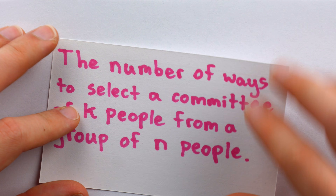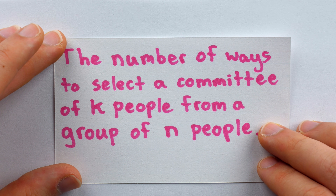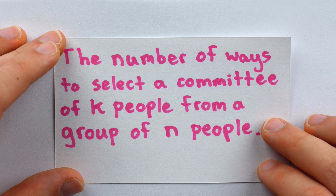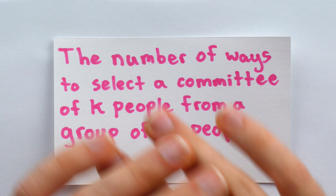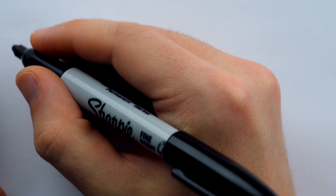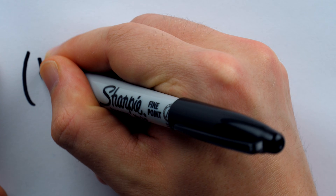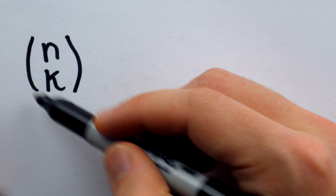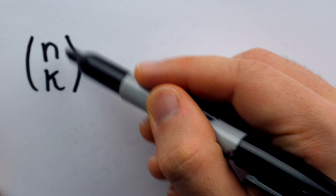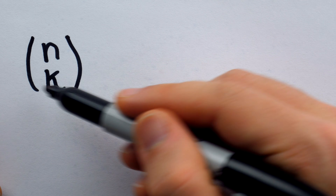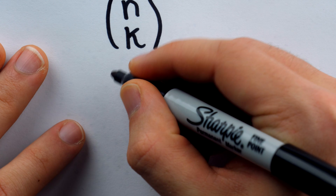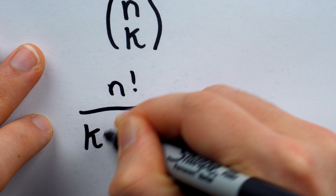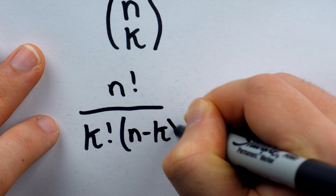Here's a more classic example from combinatorics. Suppose we want to count the number of ways to select a committee of k people from a group of n people. One way is to just count the number of ways to pick k people from a group of n people, and we have a mathematical symbol for that — called a binomial coefficient. We read this as 'n choose k,' and it is precisely the number of ways to choose k people from a group of n. It's equal to n factorial divided by k factorial multiplied by (n minus k) factorial.